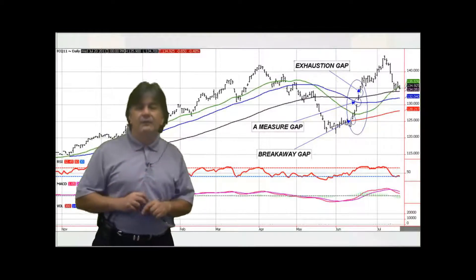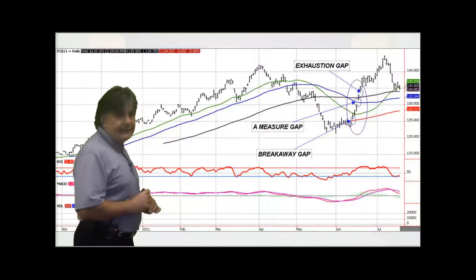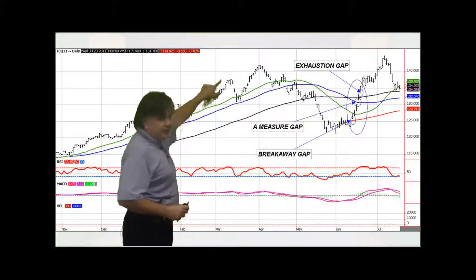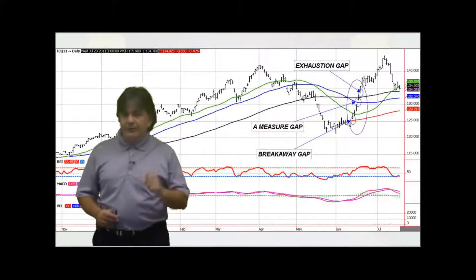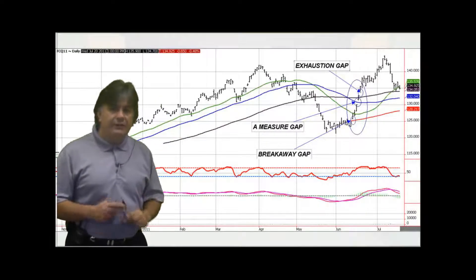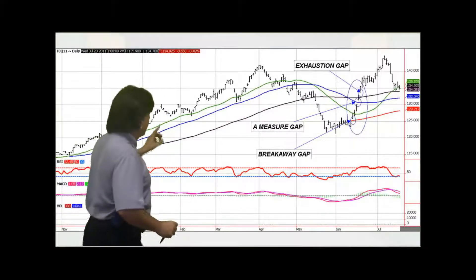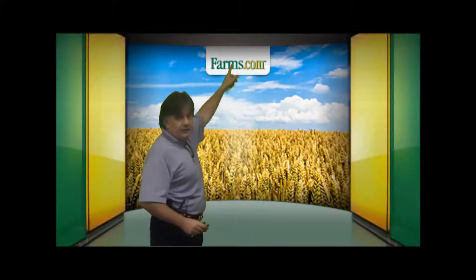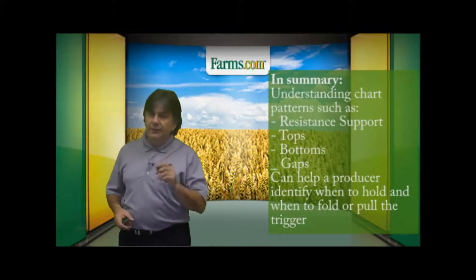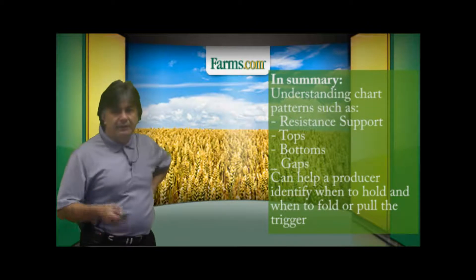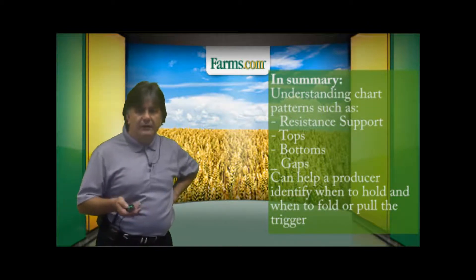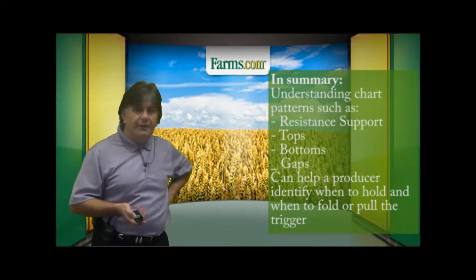Let's give you an example. 2011 August Feeder Cattle Daily Futures Chart and you can see there closely there were three in a row. There was a breakaway, a measure, an exhaustion gap. Now in this case, the market continued to move higher and eventually came back down. Still above that exhaustion gap, but showing that maybe the market's getting a little tired and change in trend there.